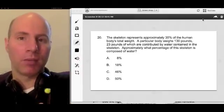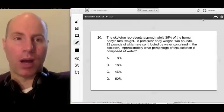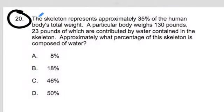This is a great problem involving percents and word problems. Number 20: The skeleton represents approximately 35% of the human body's total weight. A particular body weighs 130 pounds, 23 pounds of which are contributed by water contained in the skeleton. Approximately what percentage of the skeleton is composed of water?